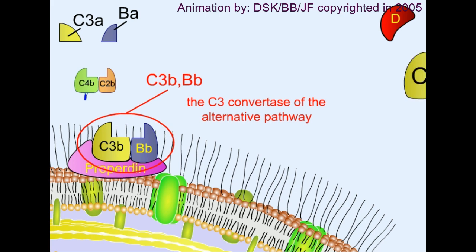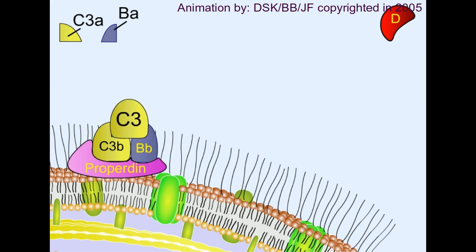It cleaves C3 into C3b and C3a. C3a diffuses away, while C3b, in the same fashion, becomes embedded and attached to the specific surface molecule of the target pathogen. Soon, a lot of C3b molecules start to be attached to the membrane surface of the target pathogen.